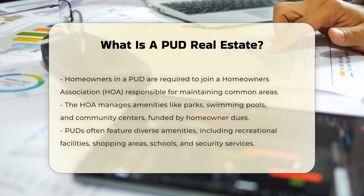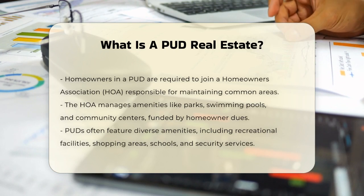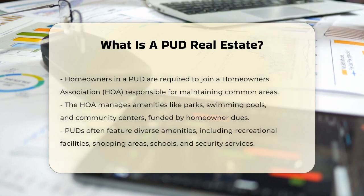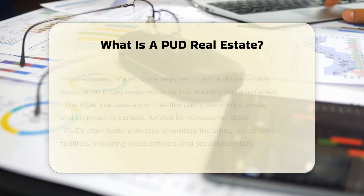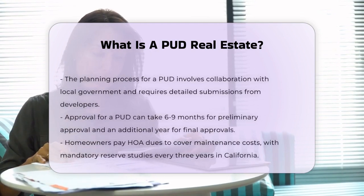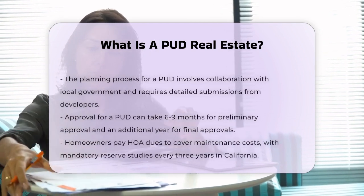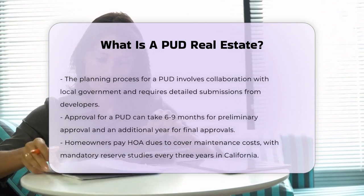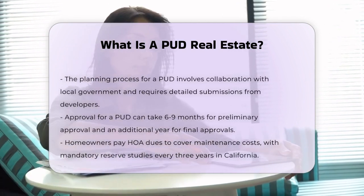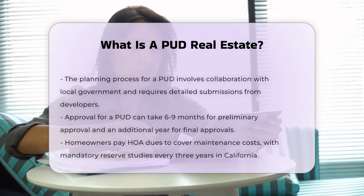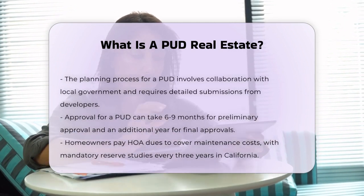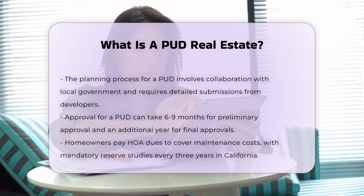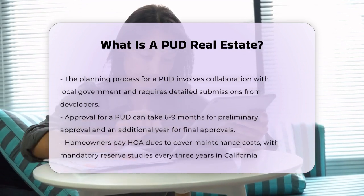Planning and approval process. The development process for a PUD involves several stages. It starts with a partnership between the developer and local or municipal government. Developers must submit detailed plans, including maintenance information, residential and urban area designs, and community amenities. The process includes obtaining preliminary and final approvals from the city, which can take around six to nine months for DRE approval and an additional year for final map and program approval.